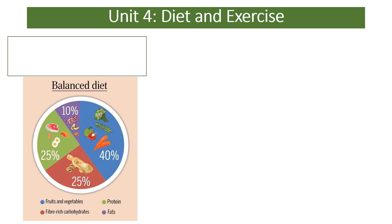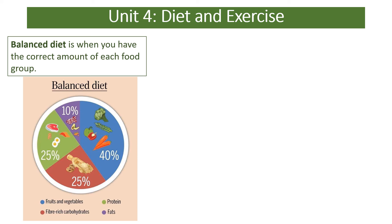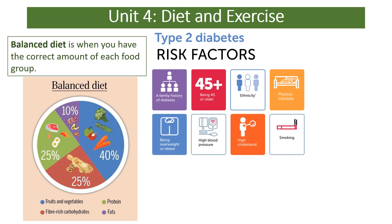The last major cause of non-communicable diseases is poor diet and a lack of exercise. A balanced diet — and this is often misunderstood — is not about having enough of each food group, but having the correct amount of each food group. Roughly 40% of your daily intake should be fruit and veg, about 25% fibre-rich carbohydrates, about 25% protein, and only 10% fat. A poor diet is a key risk factor for type 2 diabetes, heart disease, and cancers. In type 2 diabetes, your pancreas does produce insulin but your liver no longer responds to it.